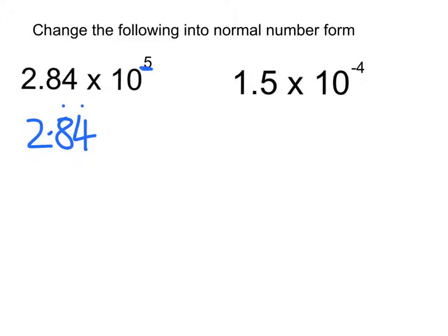So I've got 1, 2, 3, 4, 5. So I just add zeros until I get to 5 numbers. So this means taking away the decimal place, I've got 284,000.